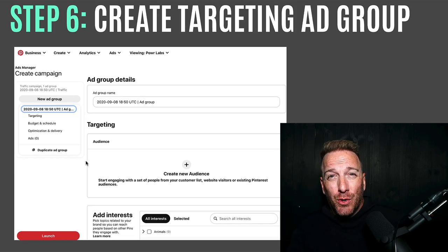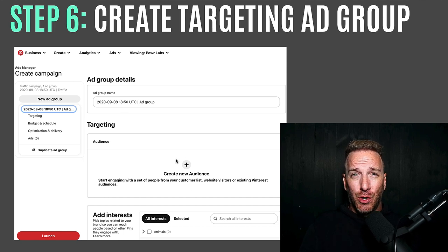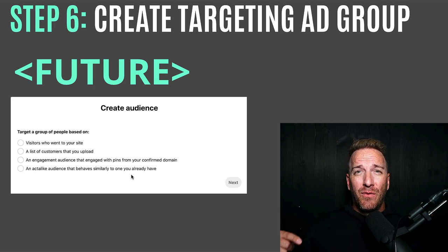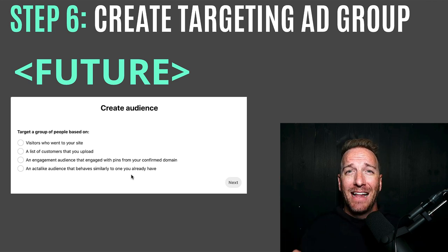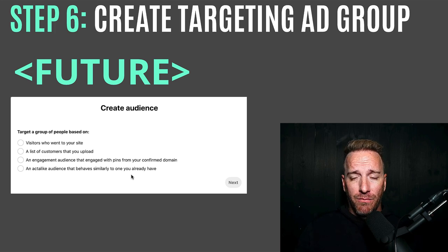Step 6: create the ad group. You can rename it here. There's an option to create a new audience — this is for future use, not when you first set up. If you've got people who've visited your boards or pins over the last few months, you can retarget them with ads later. For now, skip the audience creation and move on to adding interests.